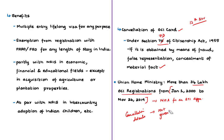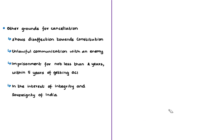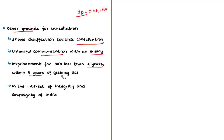Other grounds for cancelling OCI cards under Section 7-D of the Citizenship Act of 1955 include: if the overseas citizen of India has shown disaffection towards the Constitution of India, unlawfully traded or communicated with an enemy, or has been sentenced to imprisonment for a term of not less than 2 years within 5 years after registration. The central government can also cancel OCI status if necessary in the interest of the sovereignty and integrity of the nation.